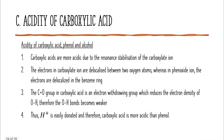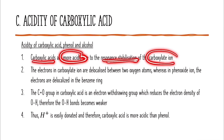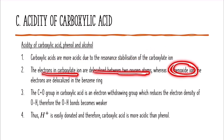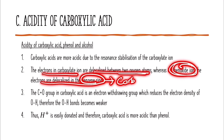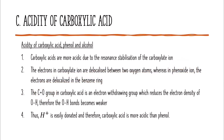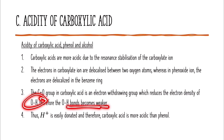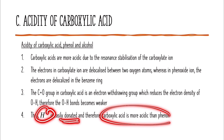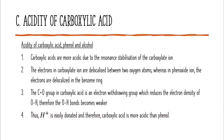In conclusion, carboxylic acids are more acidic due to the resonance stabilization of the carboxylate ion — the electrons are delocalized between the two oxygen atoms. In a phenoxide ion, electrons are delocalized in the benzene ring. The C=O group in carboxylic acid is an electron-withdrawing group, which reduces the electron density of the OH bond, making it weaker and allowing H+ to be easily donated. Therefore, carboxylic acid is more acidic than phenol.